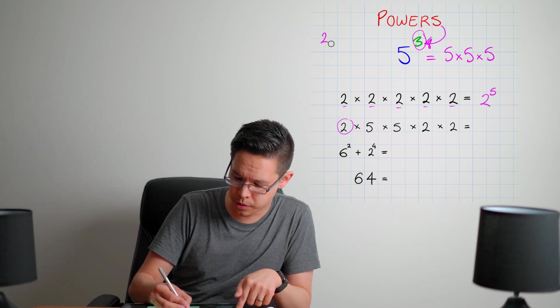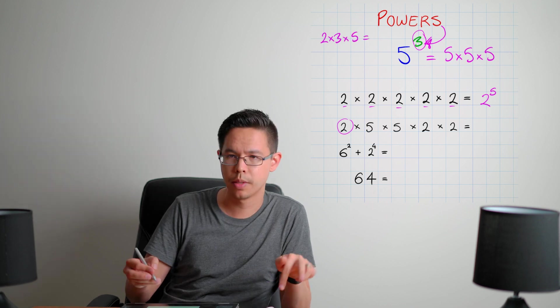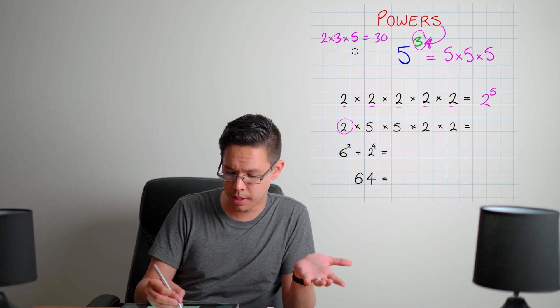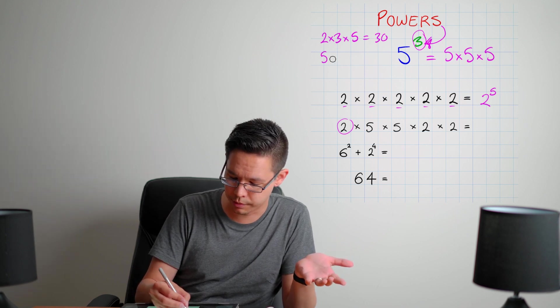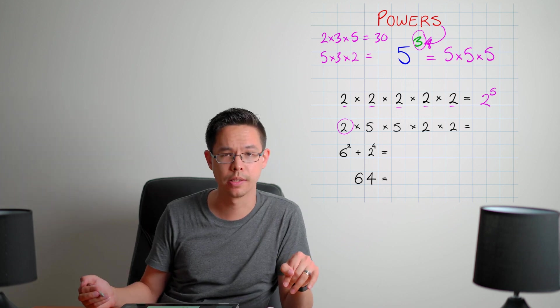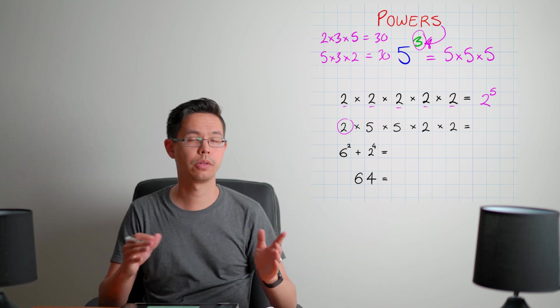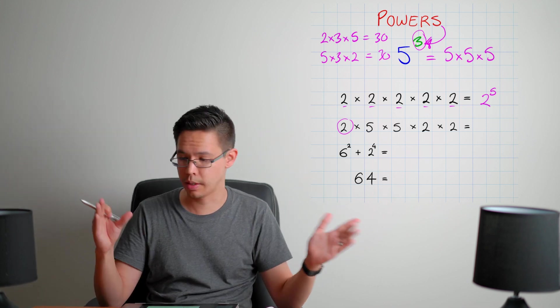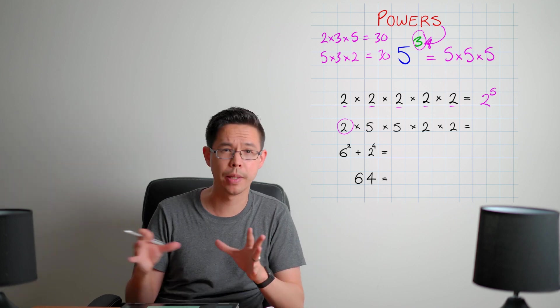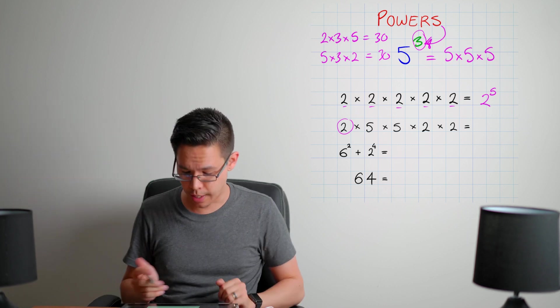So for example, two times three times five - well, two times three is six, six times five gives me 30. Well, that is exactly the same answer if I shuffle it backwards, so I've got five times three times two. Well, five times three is 15, double that, I get 30 again. So you can see how when things are written in multiplication, all stacked together, you can shuffle them for convenience. So if you can move this bit over there, then you can proceed with some further maths, go ahead and do that.